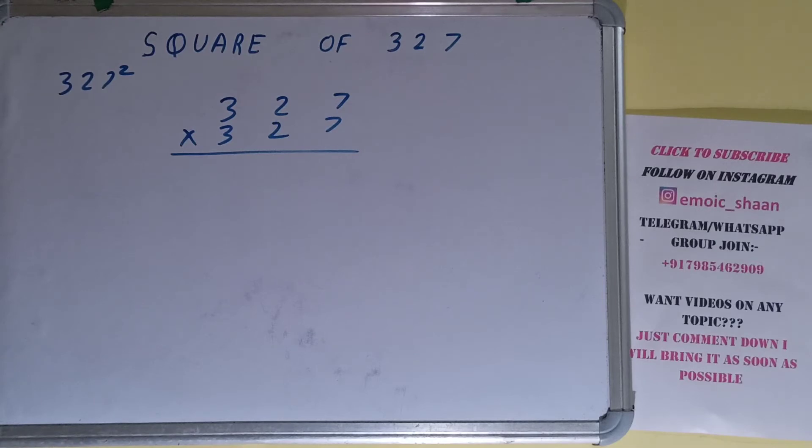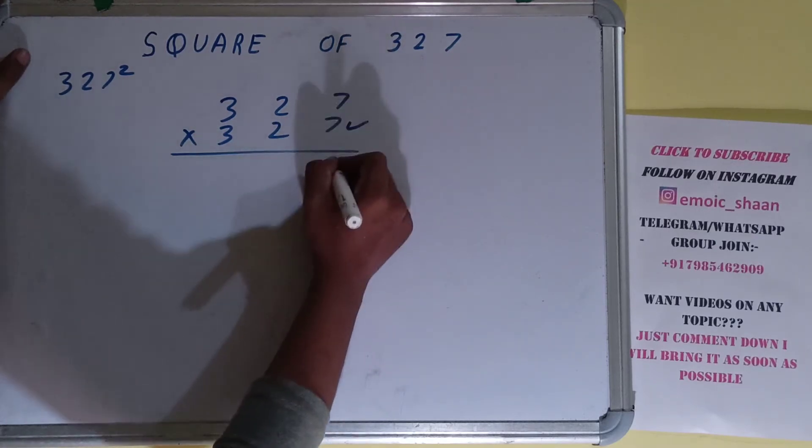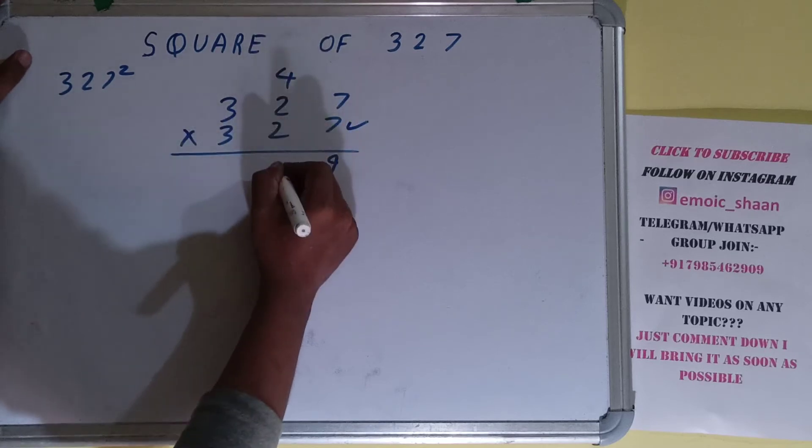So let's start with this. 7 times 7 is 49. 4 carry, 7 times 2 is 14 plus 4 is 18. 1 carry.